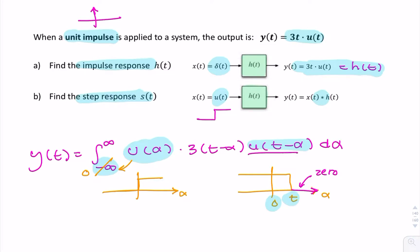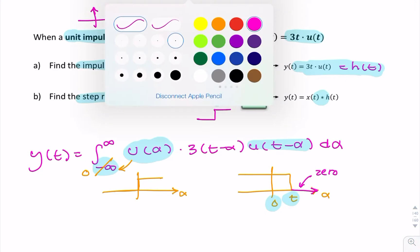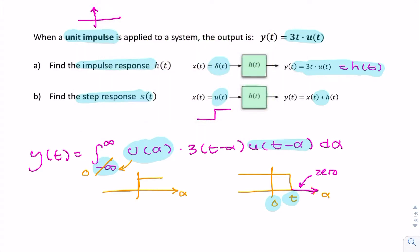So multiplying anything by zero is just going to give you zero. So the effect of having this unit step is to change the upper limit to t, provided that t is greater than zero. So that's our condition. So t has to be greater than zero for this bit to actually exist.